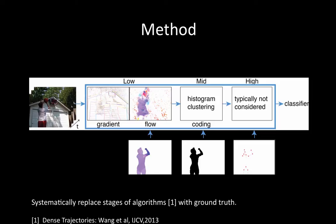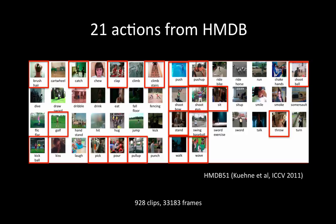Our method involves taking an algorithm and replacing every stage of the algorithm with ground-truth data to see what is important. These ground-truth data points are more accurate flow, a foreground human mask, and the joint positions. We choose the state-of-the-art dense trajectories algorithm. To obtain video data, we choose a subset of 21 actions from HMDB51. These actions contain one main person in action.